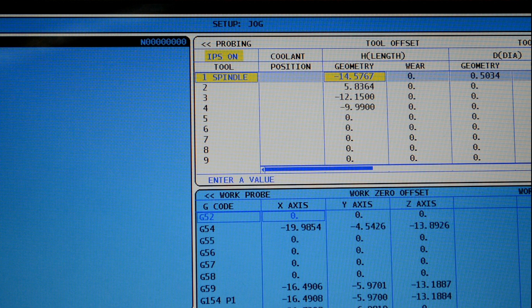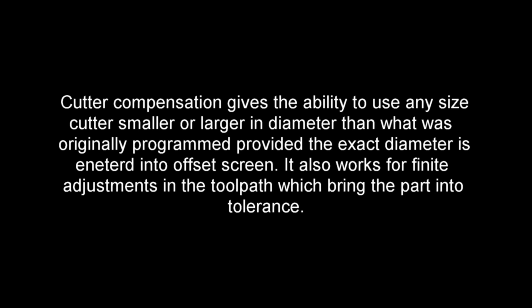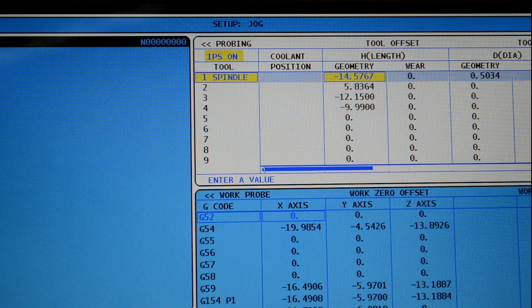This also works for the tool length offset, but it's just one for one, obviously, because you're not dealing with a diameter versus a radius. So, cutter compensation gives the ability to use any size cutter, smaller or larger in diameter, than what was originally programmed, provided the exact diameter is entered into the offset screen. It also works for finite adjustments in the tool path, which bring the part into tolerance. That's the basics of cutter compensation.